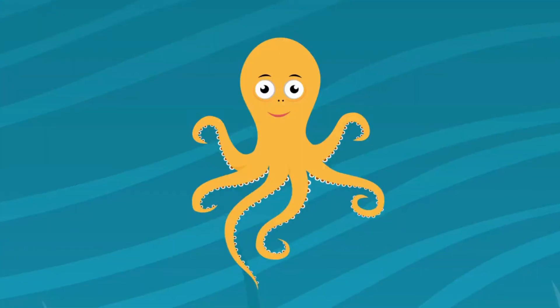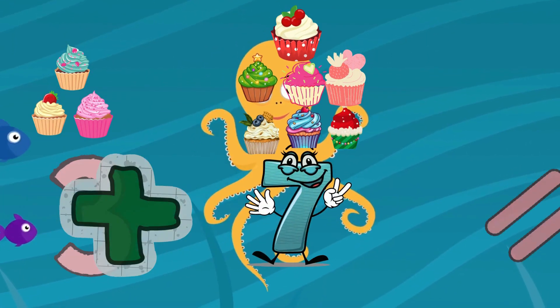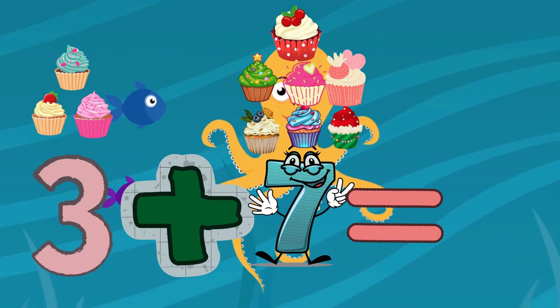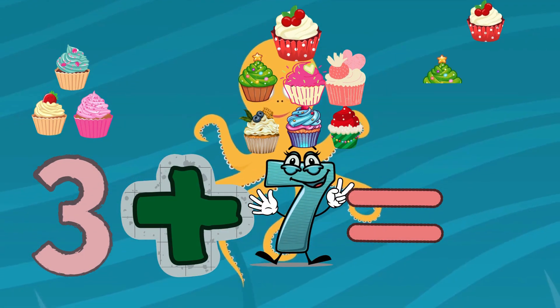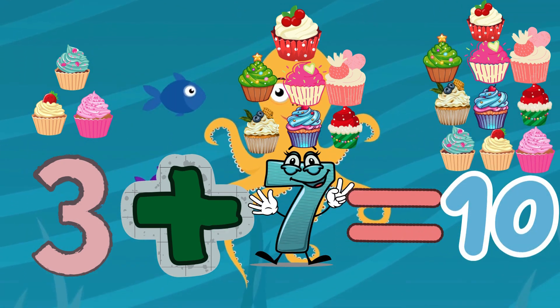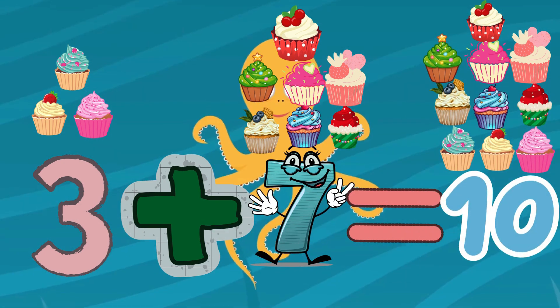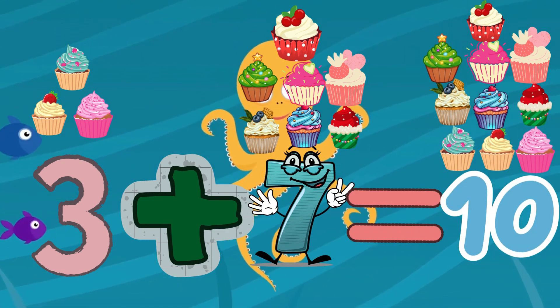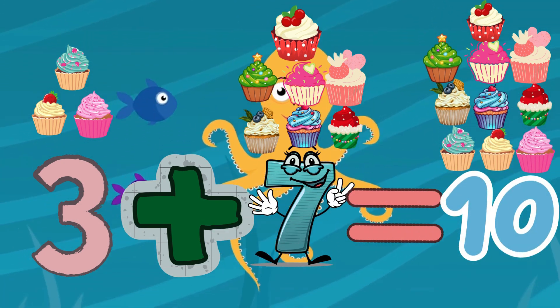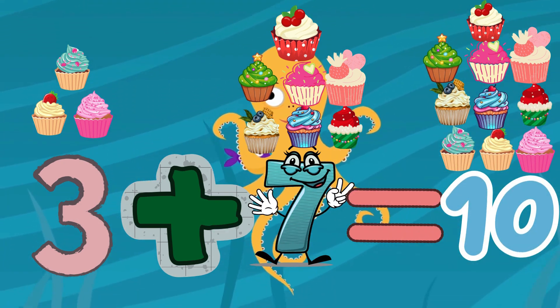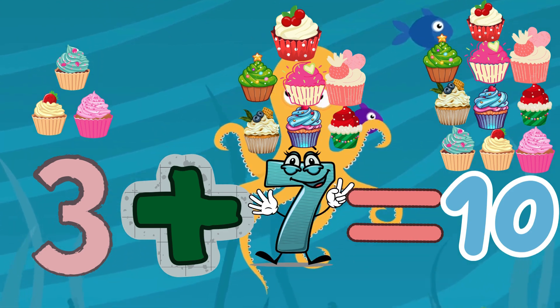3 plus 7 equals 10. 3 cupcakes plus 7 cupcakes equals 10 cupcakes.